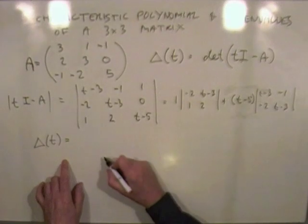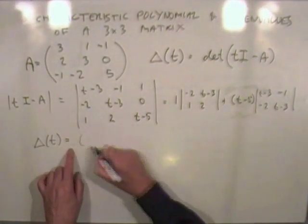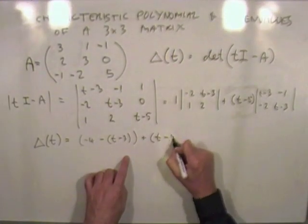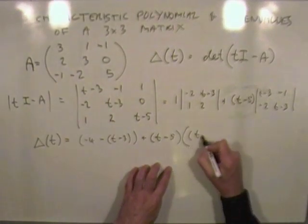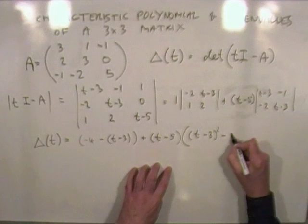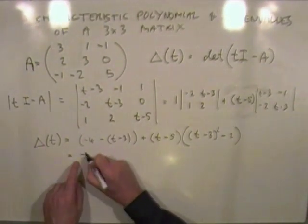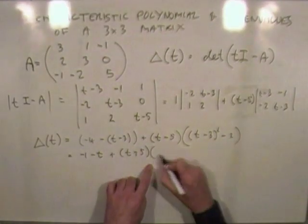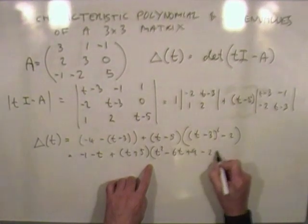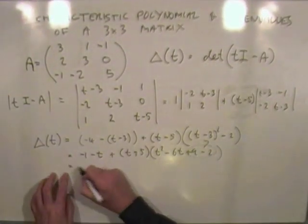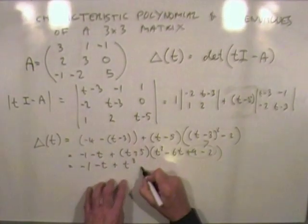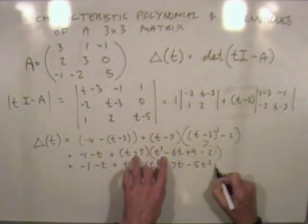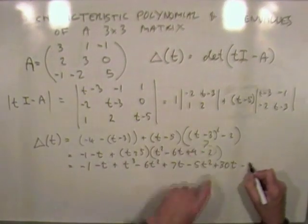Expanding this algebra out: the first part gives negative four take away t minus three, which simplifies to negative one minus t. Then t minus five times the 2×2 minor, which gives t minus three squared minus two, expanding to t squared minus six t plus nine minus two, so t squared minus six t plus seven. Multiplying through: t times that adds one to all the powers, minus five times each term gives minus five t squared plus thirty t minus thirty five.